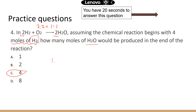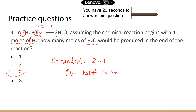What if we change this to oxygen — how many moles of oxygen are needed for a complete chemical reaction? Hydrogen to oxygen is a 2-to-1 ratio, so for oxygen you only need half the moles of hydrogen gas. If you start with 4 moles of hydrogen gas, half of that is 2 moles of oxygen.